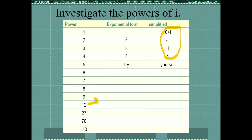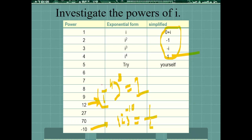For example, iota to the power 12: write it as (iota⁴)³, and since iota⁴ = 1, we get 1 to the power 3 = 1. For iota to the power minus 10: first consider iota to the power 10, which is iota to the power 2×5 = (iota²)⁵ = (−1)⁵ = −1. So the answer is −1. So iota has 4 possible values: iota, minus iota, minus 1, or plus 1.